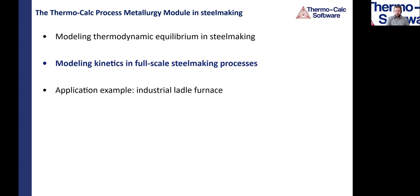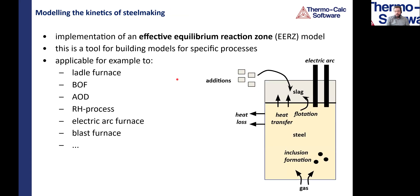Steel making is, of course, some technology which is quite seldom really in equilibrium, and therefore it's important to model kinetics. At the same time, it's important to maintain a certain performance so these applications can be applied in industry. We implement an effective equilibrium reaction zone model — a modeling technique that has been around for quite a while, with quite some literature existing. Even before this model got its name, it existed in the literature, tracing back probably around 20 years.